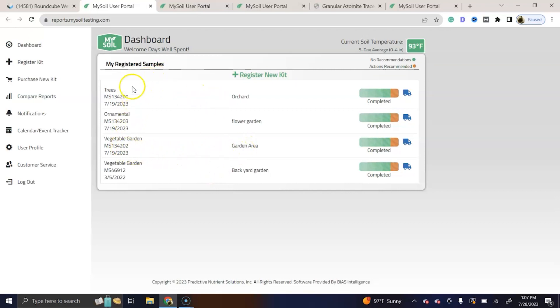Here's the garden area. These are listed by date. This was last year's sample. The area that you see where it says garden orchard or flower garden, that was the description that I entered based on where the sample came from.